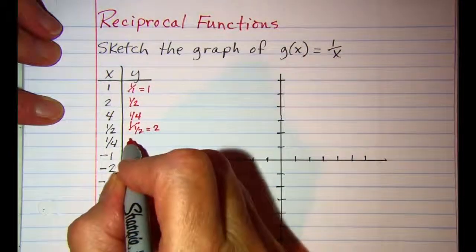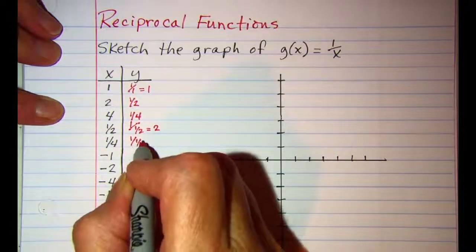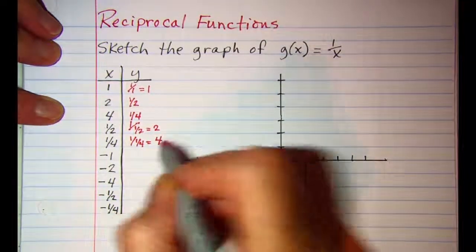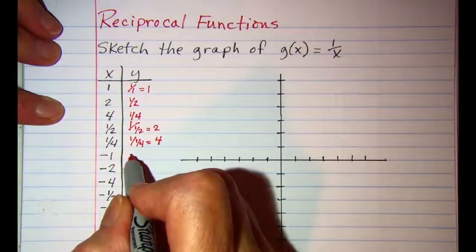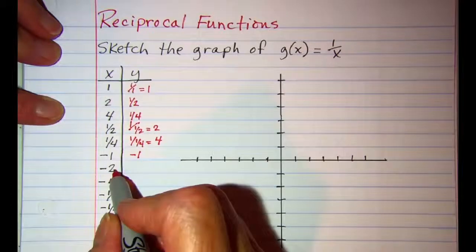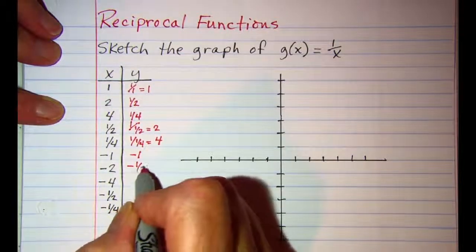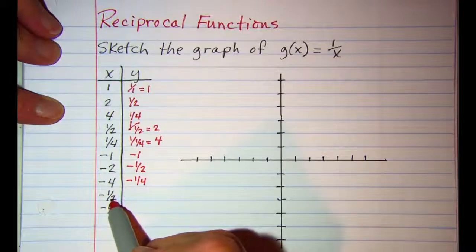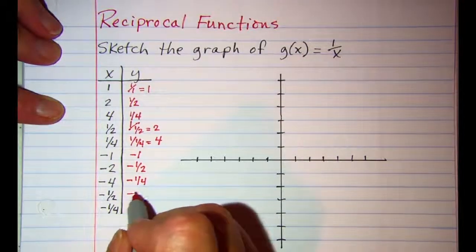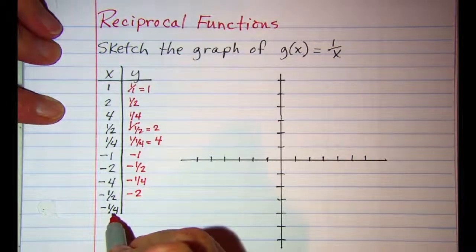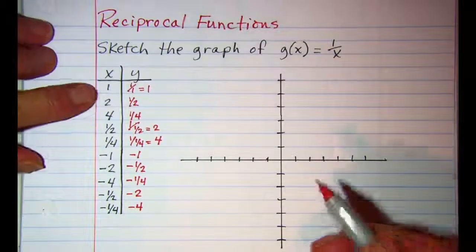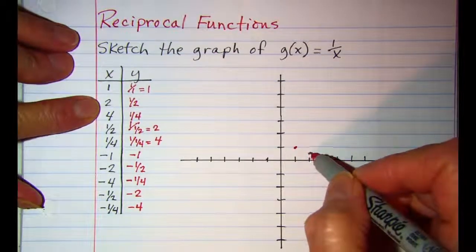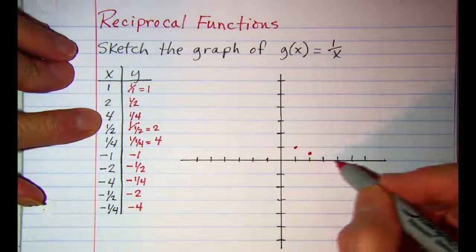When x is one fourth, y is one divided by one fourth, which is the same as one multiplied by four, so four. When x is negative one, y is negative one. When x is negative two, y is negative one half. When x is negative four, y is negative one fourth. When x is negative one half we have negative two. When x is negative one fourth we have negative four. If we plot these points — x equals one, two, one half, four, one fourth — we can observe the behavior of the curve.